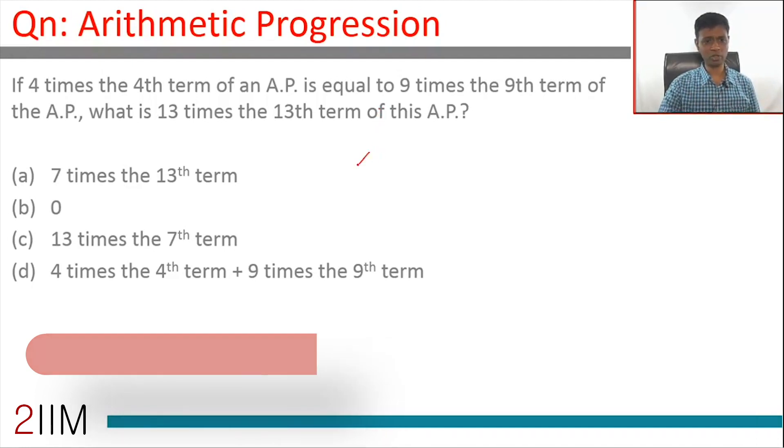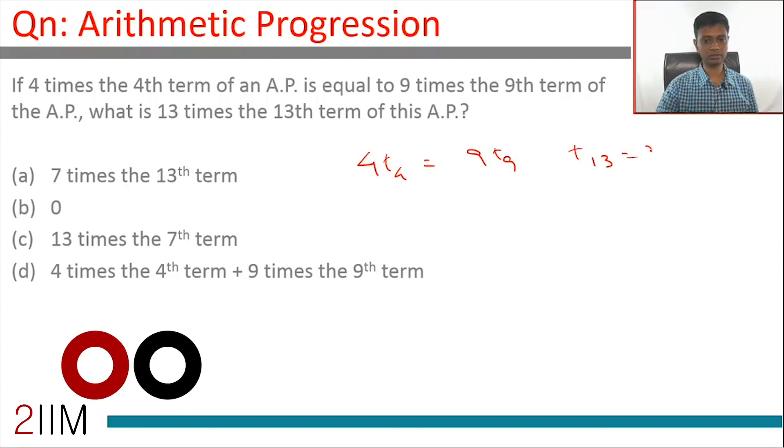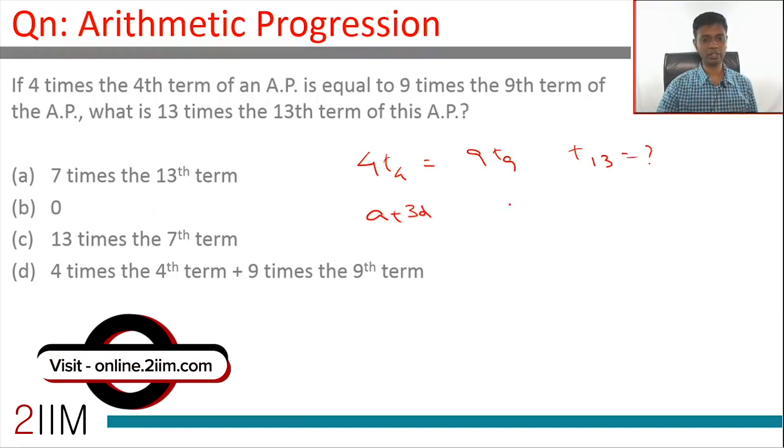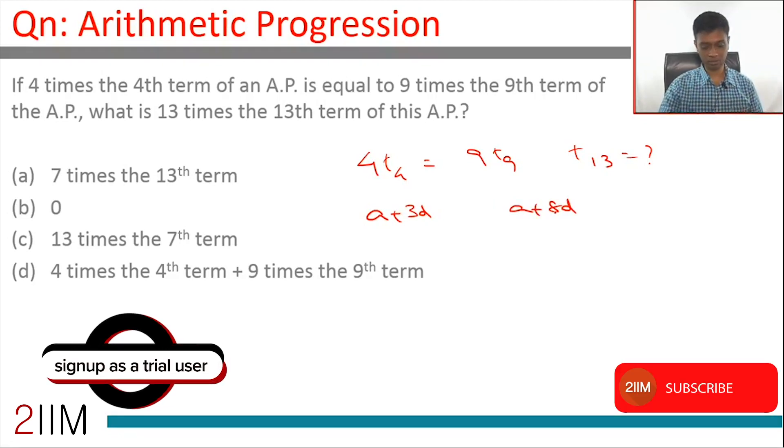And very simple question, 4 times T4 equals 9 times T9, what is T13? T4 is A plus 3D, T9 is A plus 8D, we just frame the equation and then simplify from there.